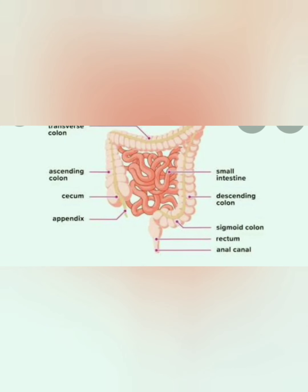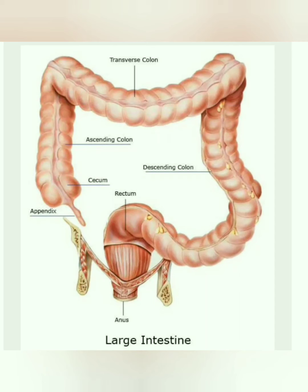The remaining food is then passed from the small intestine to the large intestine. The large intestine is a long and wide tube tightly coiled around the small intestine, and it is the end of the digestive system. It receives the remains of food from the small intestine. The large intestine absorbs the excess water and salts from the remaining food.